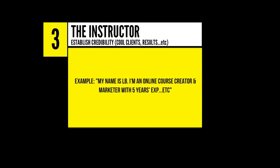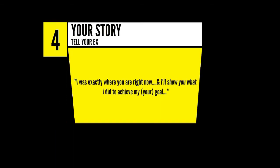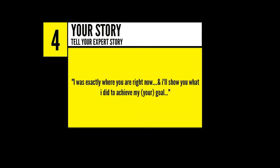This is where you try to establish credibility and prove you're a great instructor who your target students need to learn from to solve their problem and achieve their goal. What you do is basically show off your expertise, your core clients, the awesome results you've been able to generate — this is the proof element — and everything relevant that will persuade your students to believe you're a credible and trustworthy instructor. Number 4: your story. The purpose of telling your expert story is to show your target students that you are where they want to get to, and you have the answers they need to help them get there too.